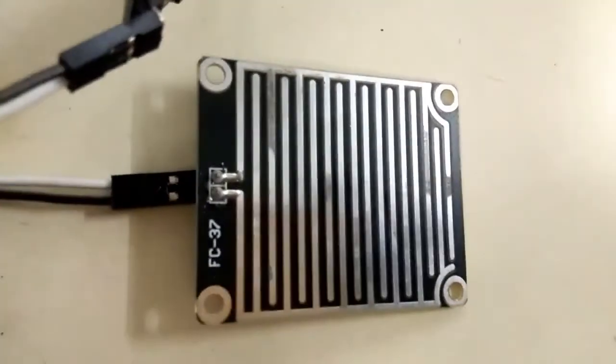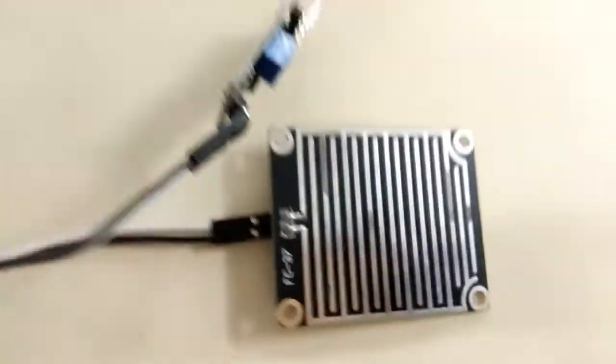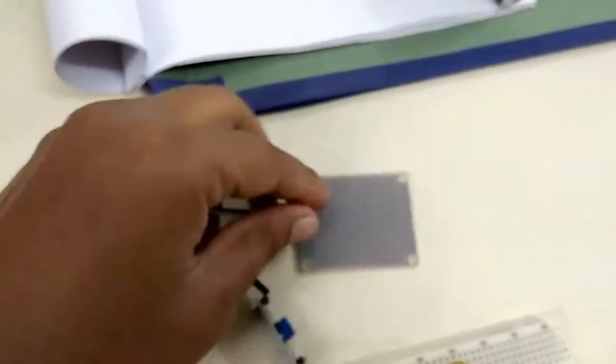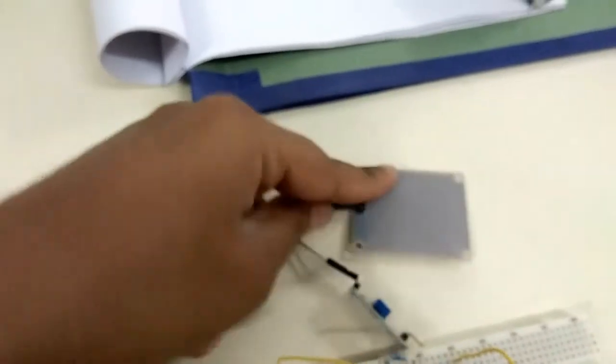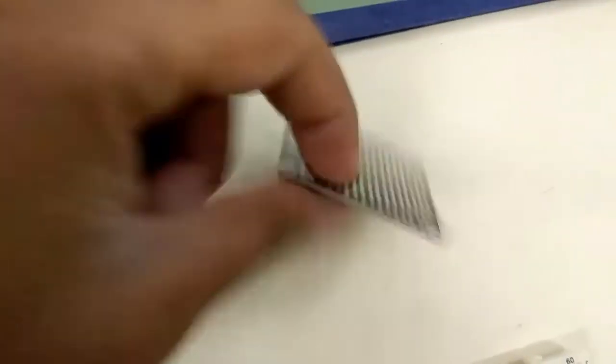You can design this by yourself. This is actually FC-37 rainfall detector circuit, but you can design it by yourself as well at home. We'll be only using this rainfall detector.